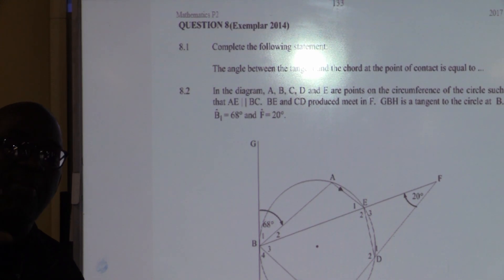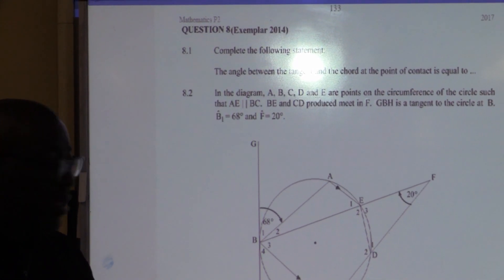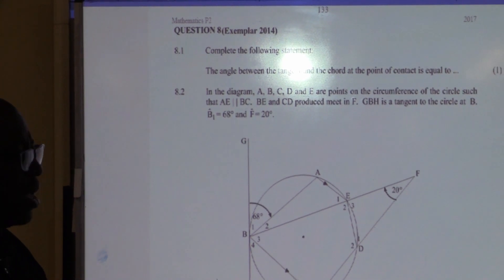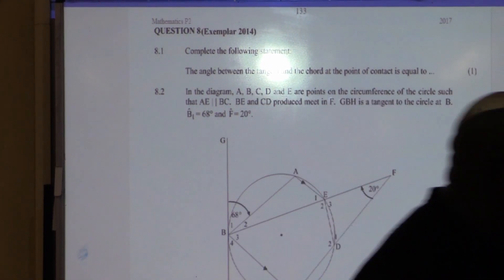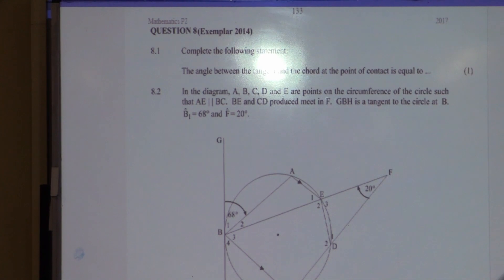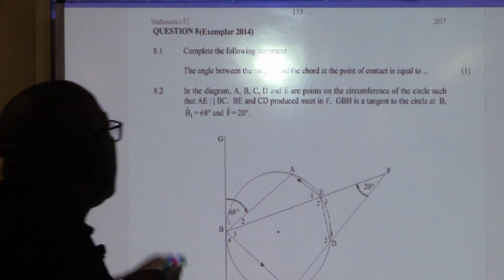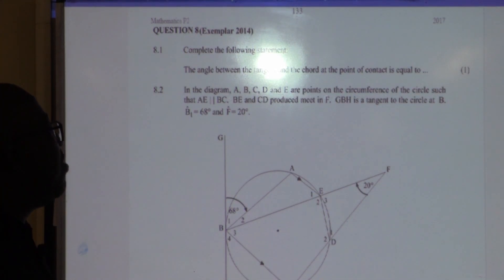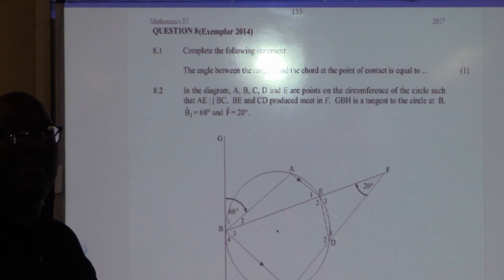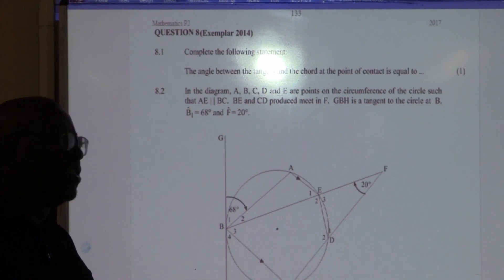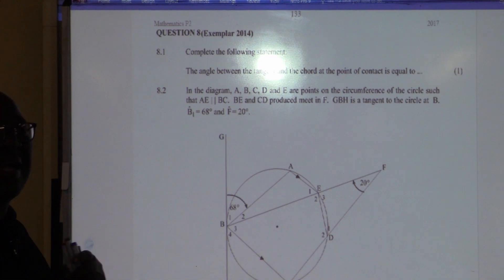Once we ask you about the theorem, we're definitely going to apply it in the actual problem. So, the first part that I wanted to emphasize is that all theorems are examinable. The angle between the tangent and the chord at the point of contact is equal to the angle subtended by that chord in the alternate segment. This is the tangent-chord theorem.